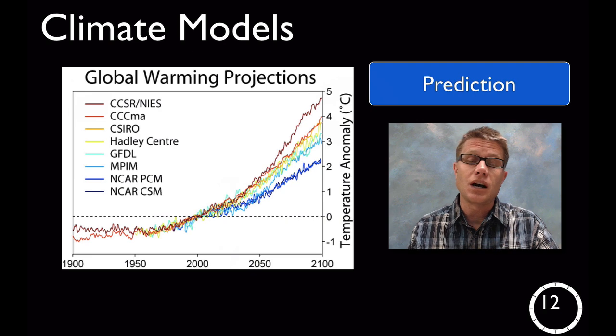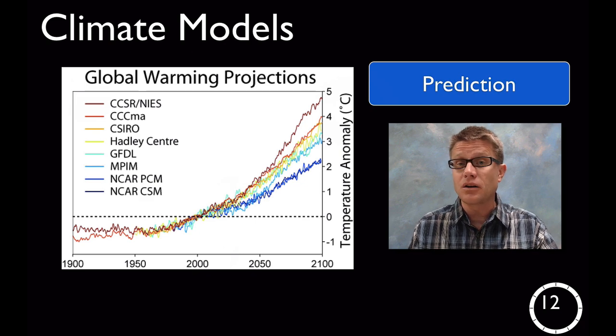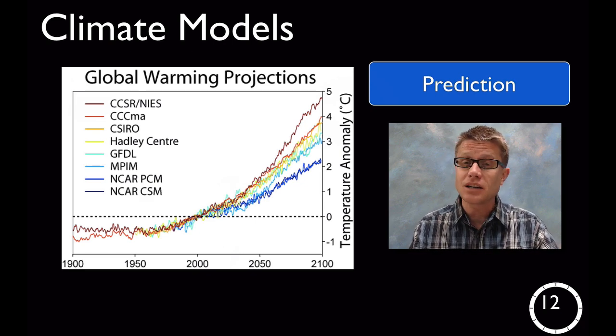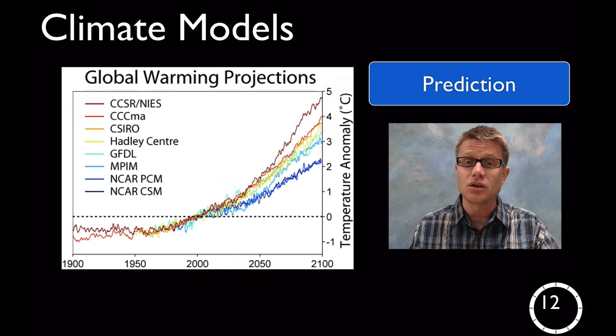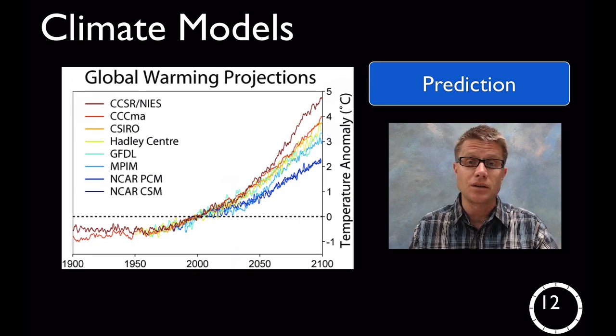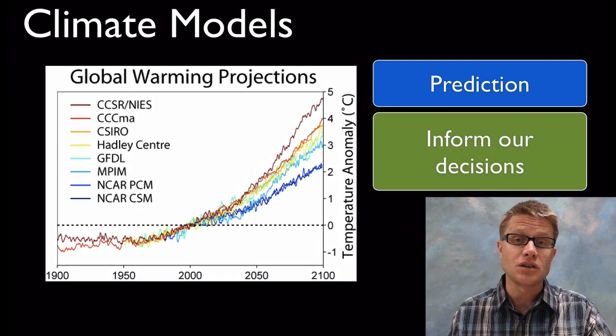As we move into high school we want to start talking about climate models. These are really complex computer models. They'll get better and better as the technology increases. We're using evidence, science and calculus to figure out what's going to happen in the future. But you need to understand that this is simply a prediction of what will happen in the future, and we need to use these models to inform our decisions in the future.